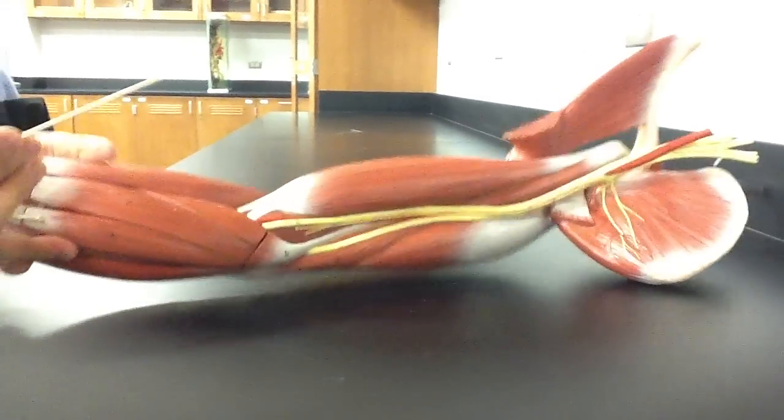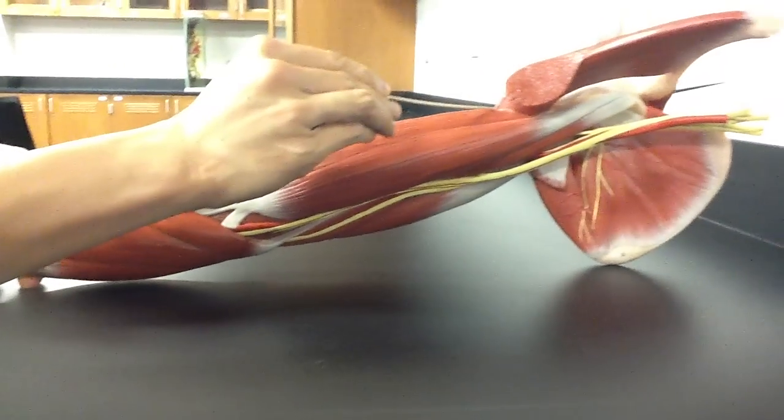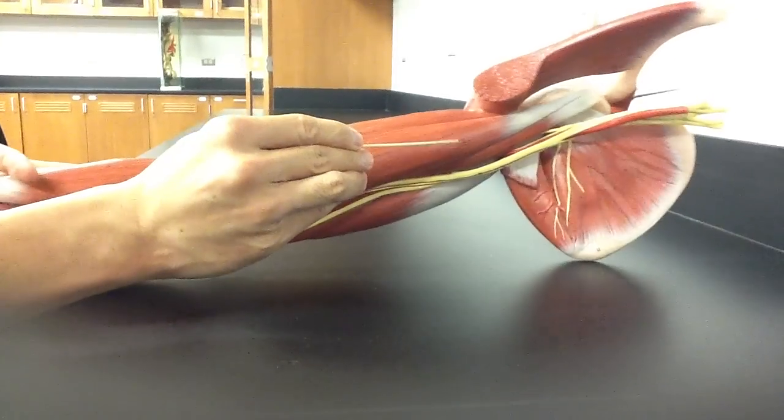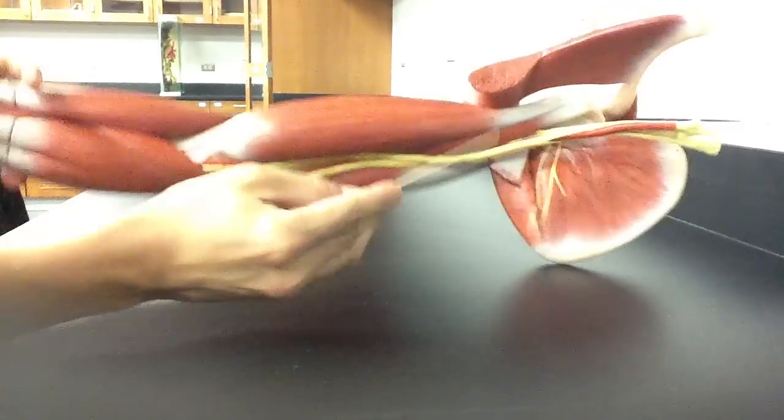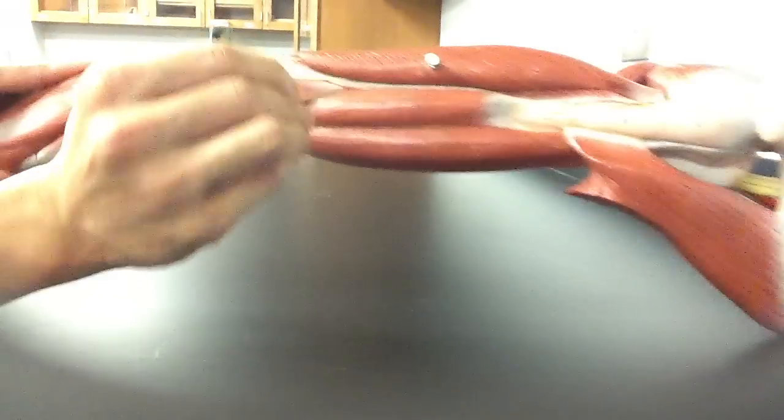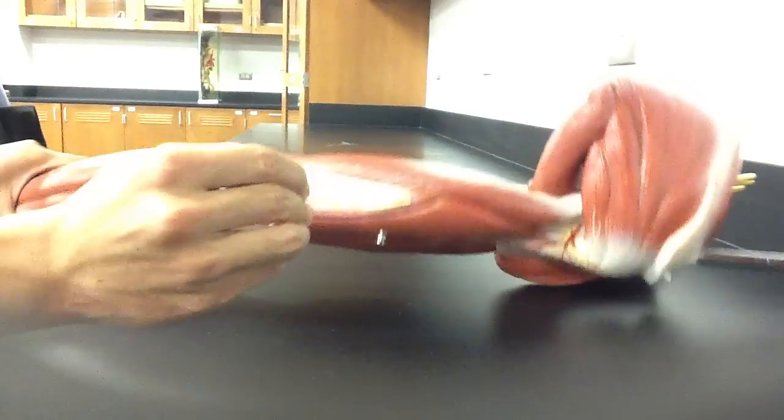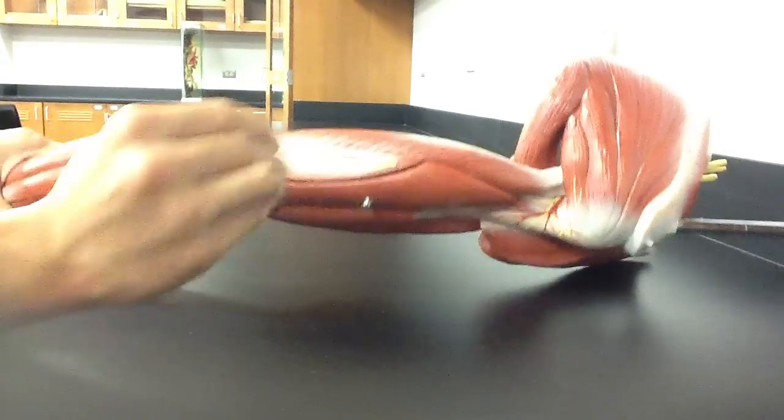So to review: biceps brachii, long head. Biceps brachii, short head. Coracobrachialis, brachialis. Triceps brachii, long head. Triceps brachii, lateral head. Triceps brachii, medial head.